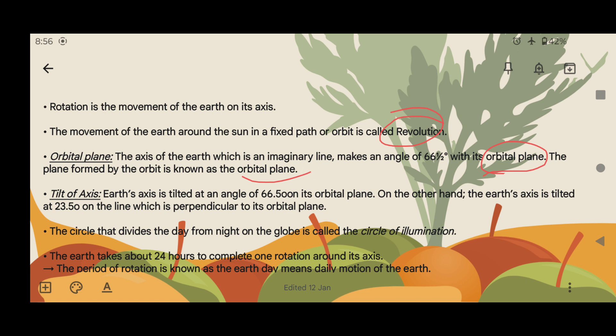Tilt of Axis: The Earth's axis is tilted at an angle of 66.5 degrees on its orbital plane. On the other hand, the Earth's axis is tilted at 23.5 degrees on the line which is perpendicular to its orbital plane.